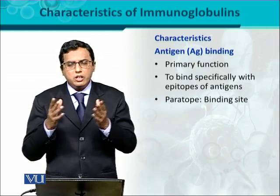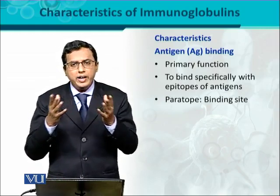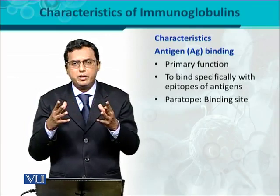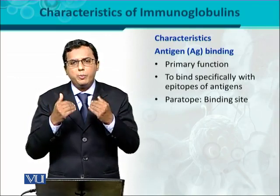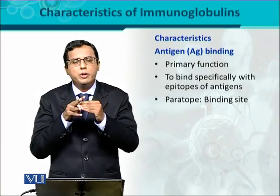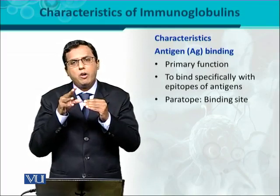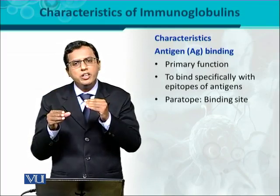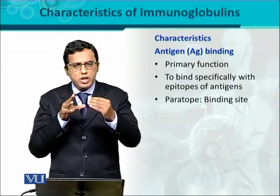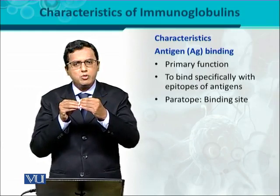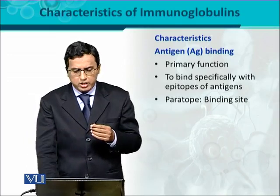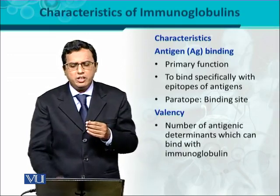The area on the antibody surface that binds with the antigen surface - the antigenic determinants which we call epitopes - the corresponding area on the antibody surface which has to bind with the antigen is called paratopes. So paratopes are present on the surface of antibodies or immunoglobulins, while epitopes are present on the surface of the antigen. Paratopes and epitopes interact with each other in the case of antigen-antibody binding.